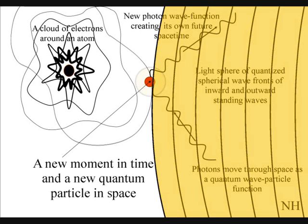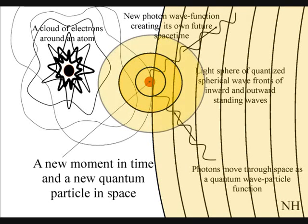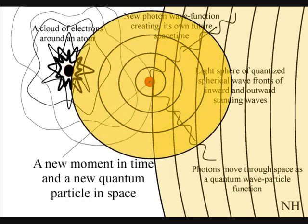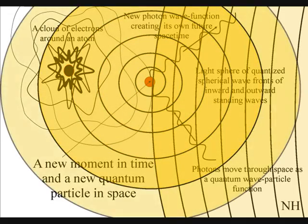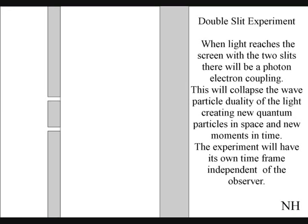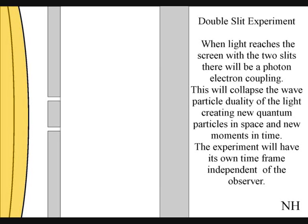There is then a quantum leap of energy creating a new wave function of future possibilities. The best way to see this happen directly with light is in the double slit experiment. The light will expand in all possible directions as a wave particle function. When it reaches the screen with the two slits, the photon will react with the electrons of the screen.